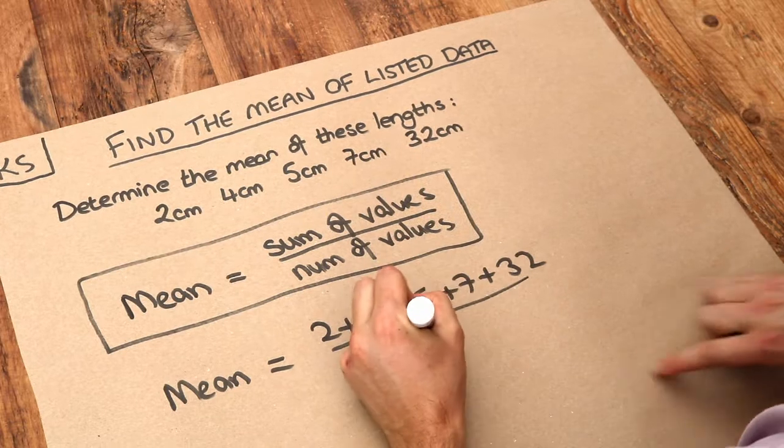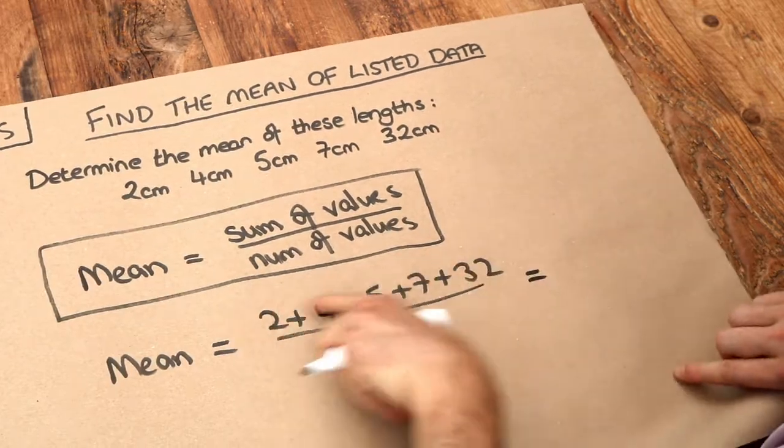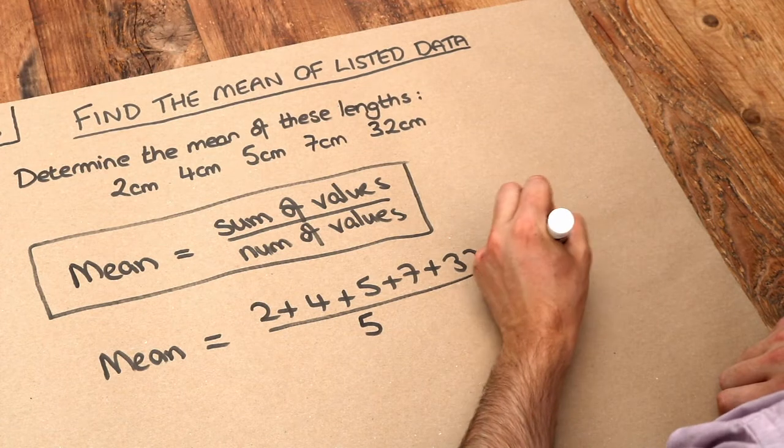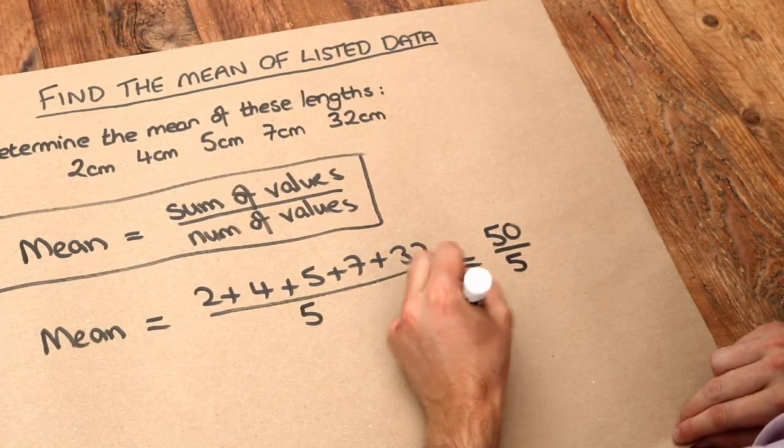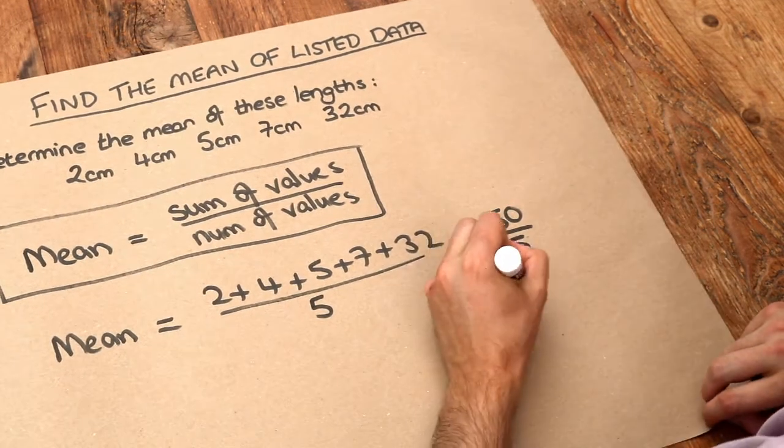1, 2, 3, 4, 5. So we're going to divide by 5. Now as we said the sum of these numbers is 50. We're going to divide it by 5 and 50 divided by 5 is 10 centimeters.